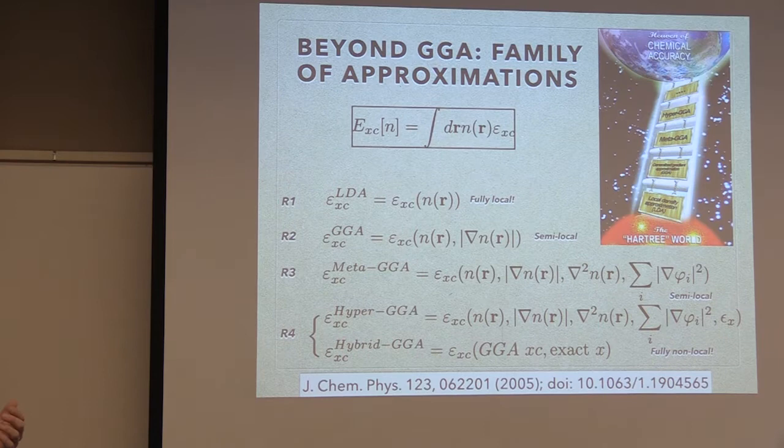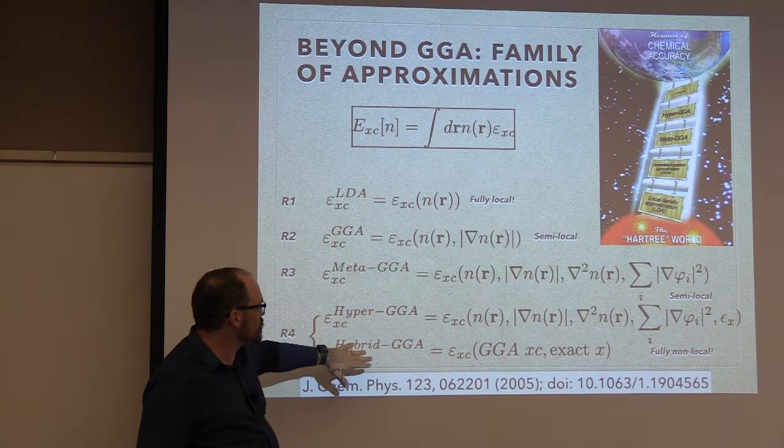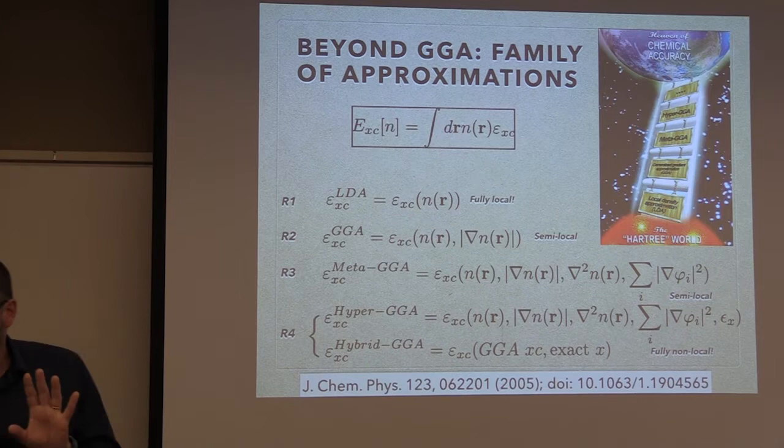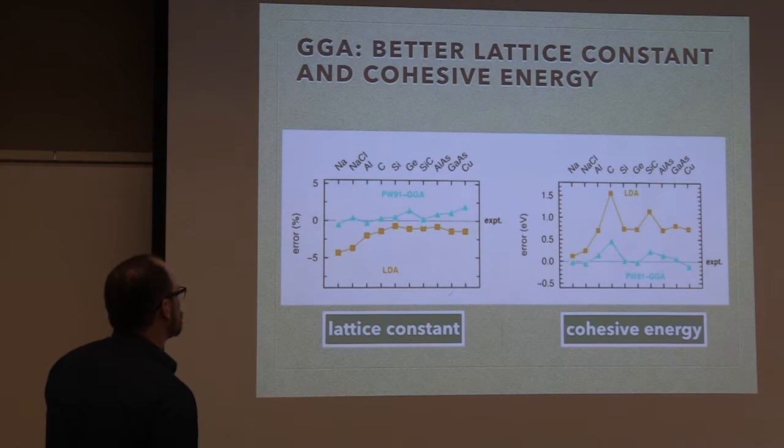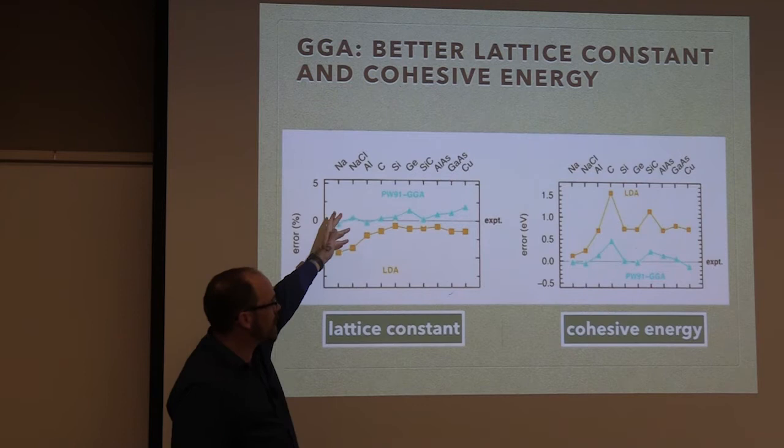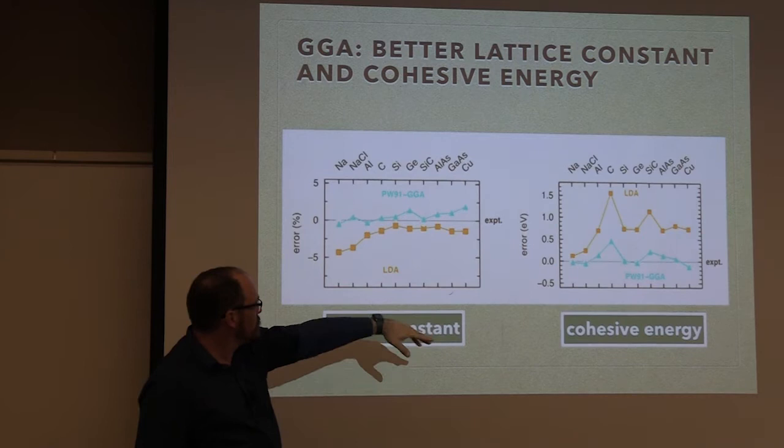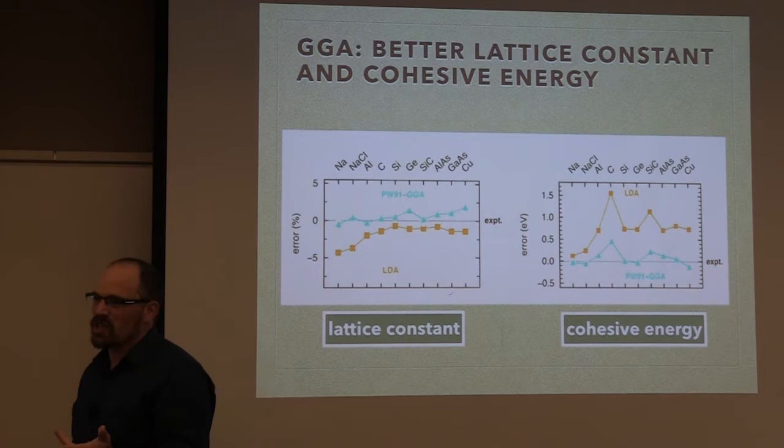I could give you a full course on the different functionals that exist, but I'm going to go over just a couple. When you talk about LDA — local density approximation — it's very simple. PW91 is Perdew-Wang 1991. Another well-known one is PBE — Perdew, Burke, and Ernzerhof. These are the three authors. We know those names because we read papers from them; those names are always there.